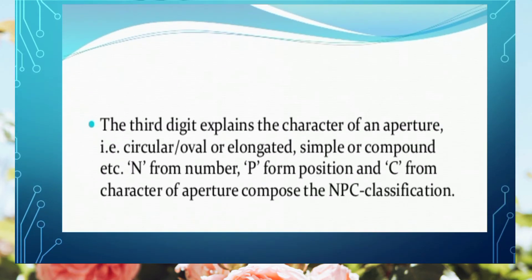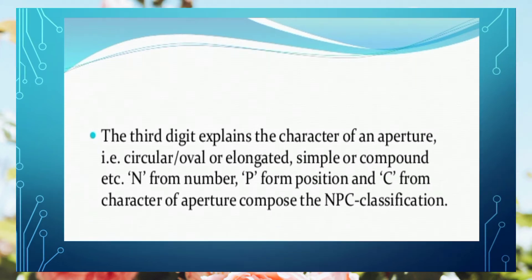The third digit indicates the character of the aperture. Character means whether the aperture is oval, completely oval or circular — in which case we use the term 'pore' — or elongated like a slit, in which case we use the term 'colpus'. We also observe whether the pollen fringe is simple, compound, or complex.